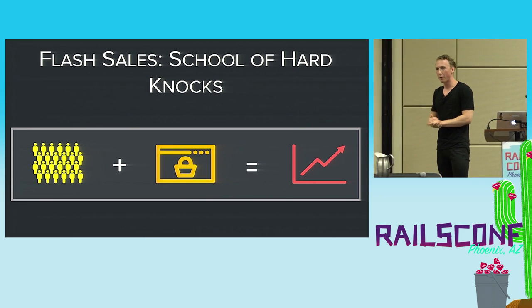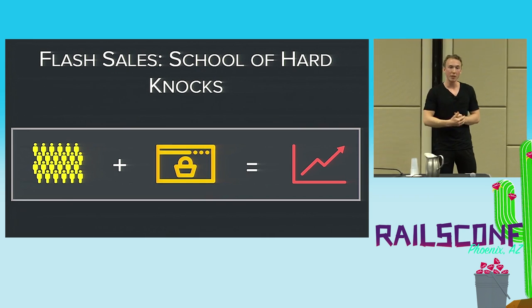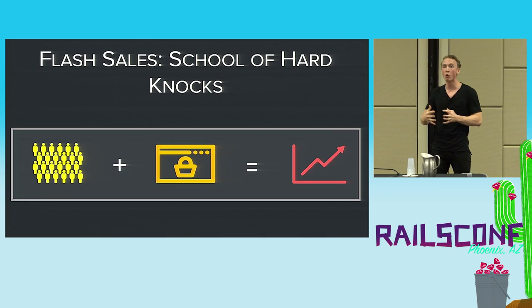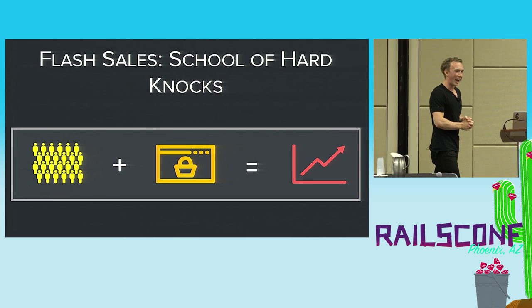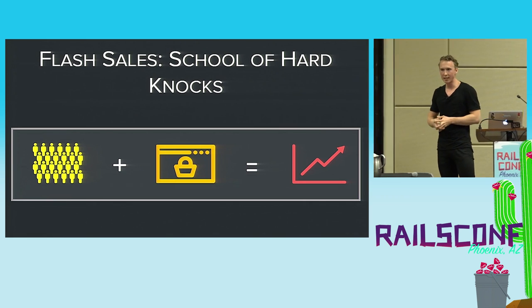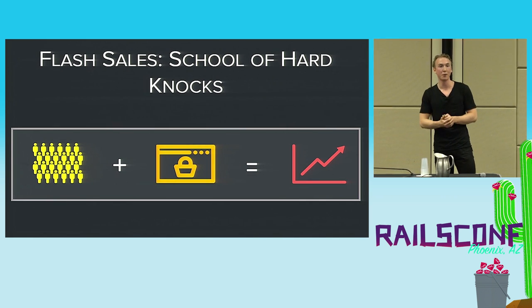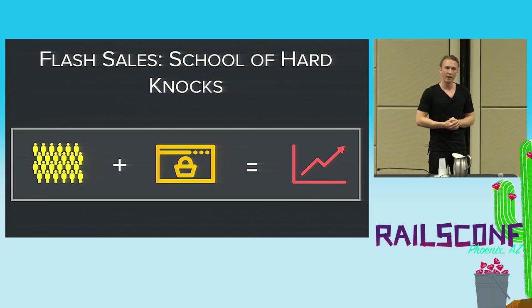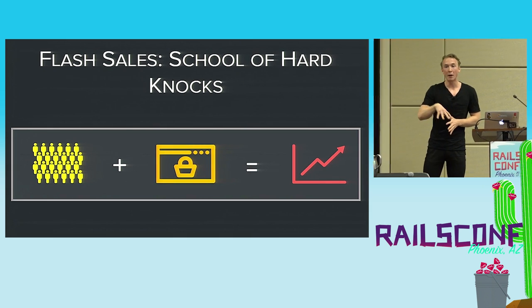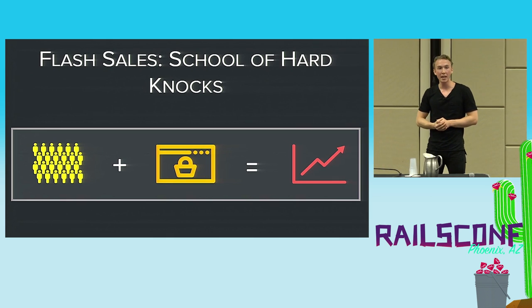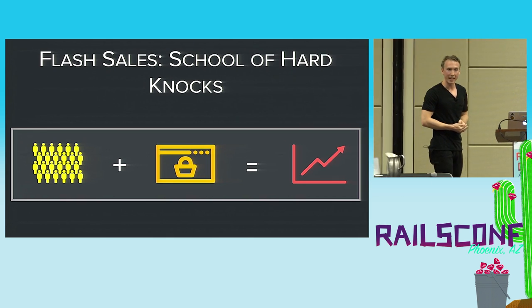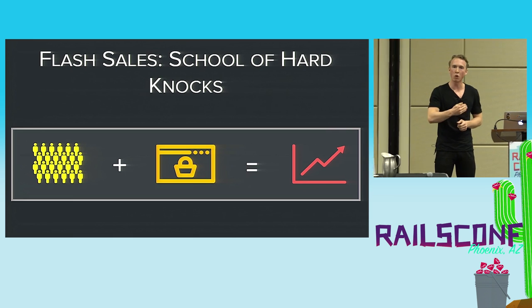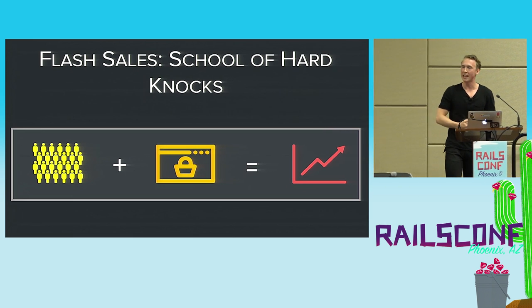We decided to go the other route. We wanted to be a company that could support these sales, and we formed a team whose sole job was to solve this problem of customers that could drive enormous amounts of traffic in a very short amount of time. This happened exactly five years ago, which is why the timeframe of the talk is five years. It was a powerful decision because this has served as a canary in the coal mine. The flash sales we see today at 80k RPS — that's what the steady state is going to look like next year. So they help us stay one to two years ahead.